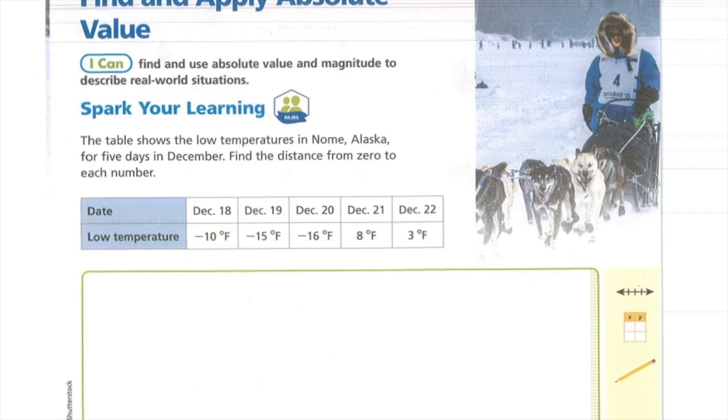Today we're going to find and use absolute value and magnitude to describe real world situations. Spark your learning. The table shows the low temperatures in Nome, Alaska for 5 days in December. Find the distance from 0 to each number.